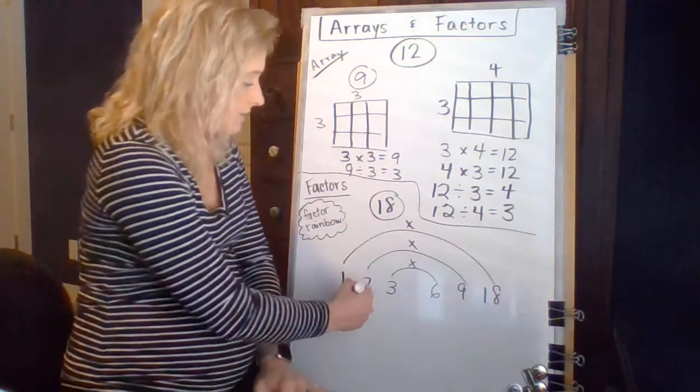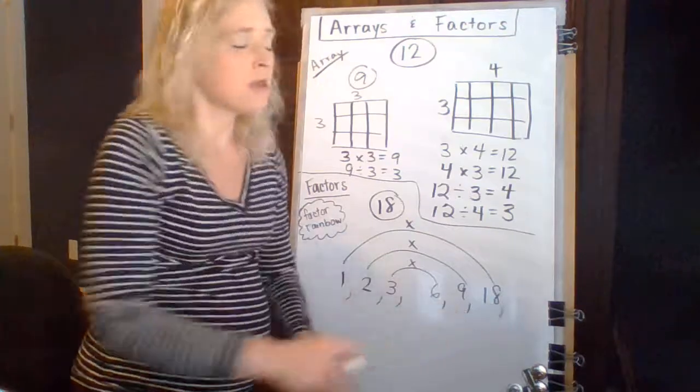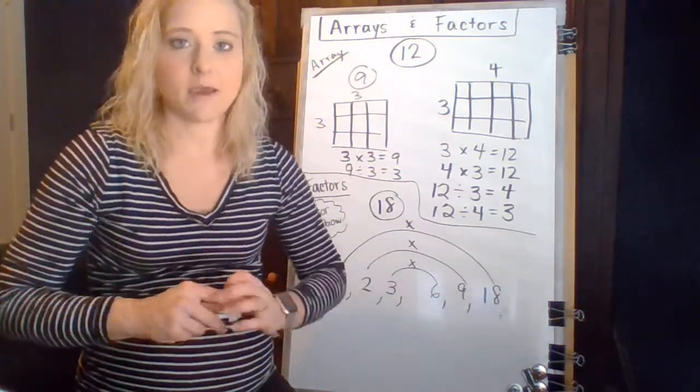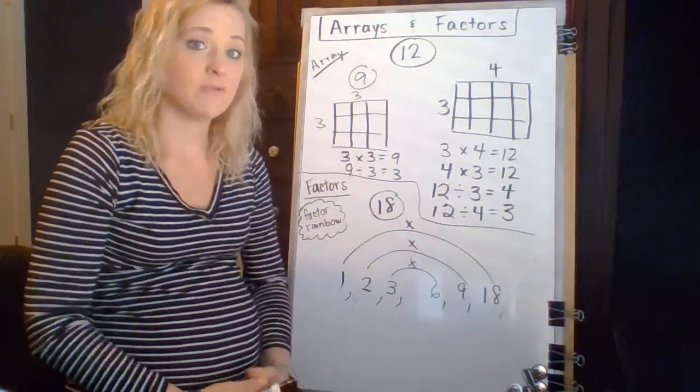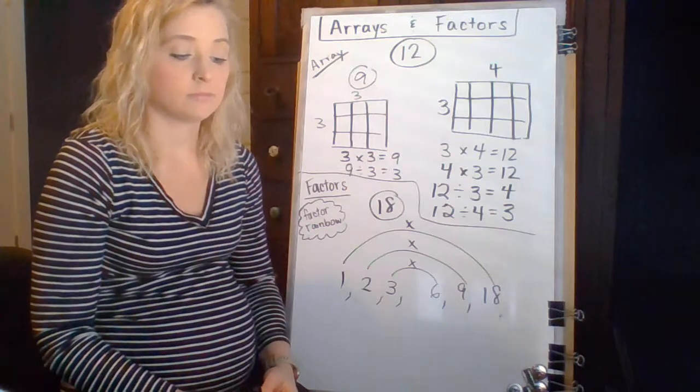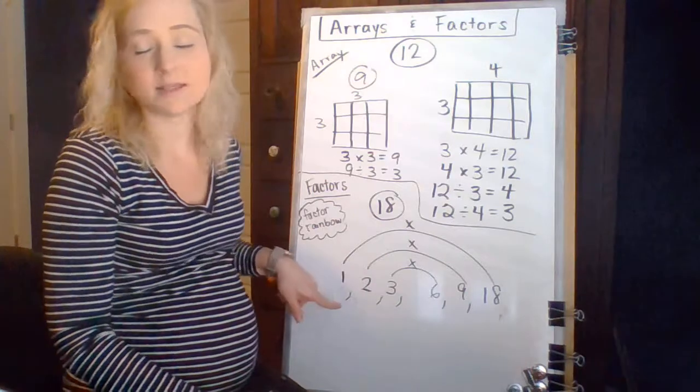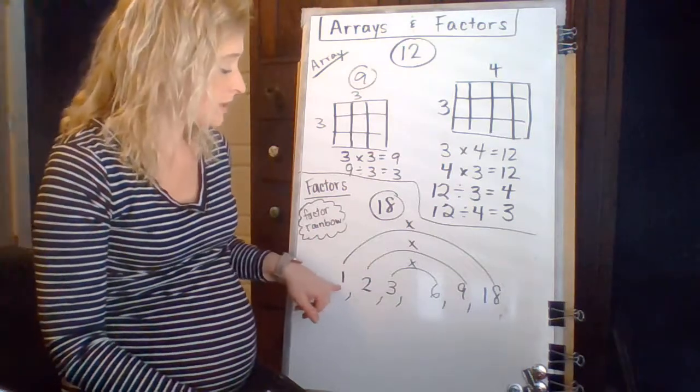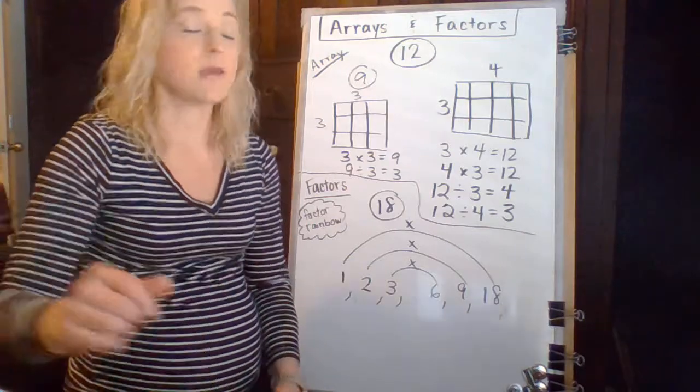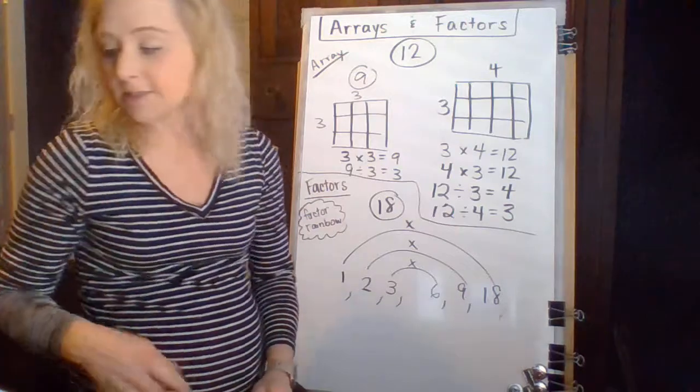When you're listing them, you can list them as one, two, three, six, nine, and 18. Those are the six factors of 18. And 18 is composite because it has more than two factors. If it only has itself and one, it's a prime number. If it has more than itself and one, then it's a composite number. So, that is a composite number.